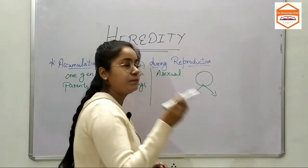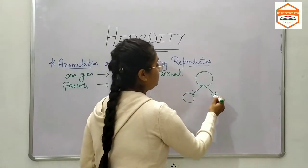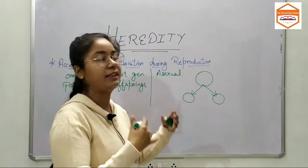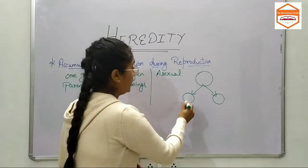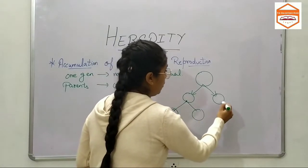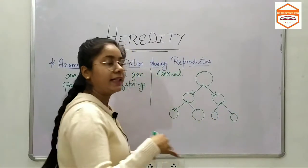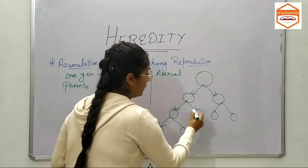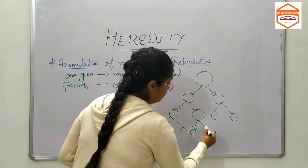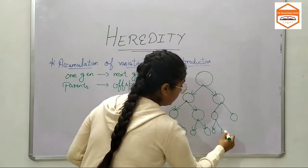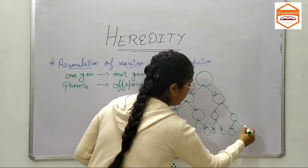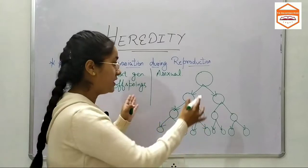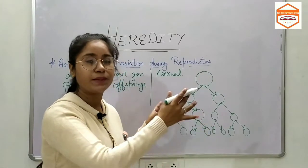Let us suppose it gives birth to two offsprings. After some time, when they get mature, they would reproduce and give birth to their offsprings. And then after some time, when they get mature, they would give birth to other offsprings. Now, what is happening here — there is variation, but it is too less. The diversity of variation here is very small.